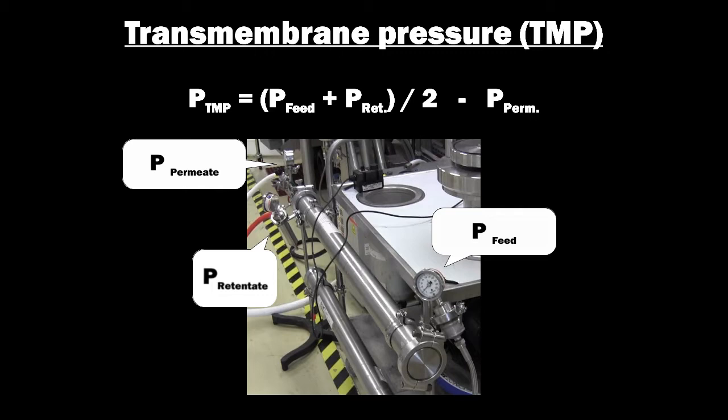When using spiral wound membranes, no back pressure should be applied to the permeate line, and this should remain at atmospheric pressure.